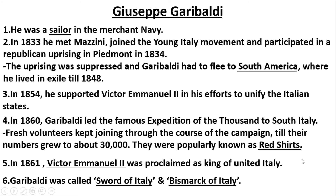Garibaldi gathered followers and formed a group called the Red Shirts. Finally, in 1861, Italy's unification was completed. Victor Emmanuel II was declared King of unified Italy. Garibaldi gave his bravery in service of Italy, and through his efforts the unification work was brought to completion. In this way, Garibaldi gave his bravery to Italy.